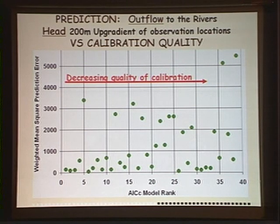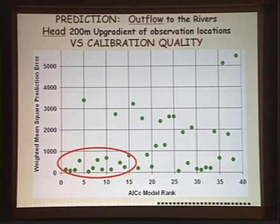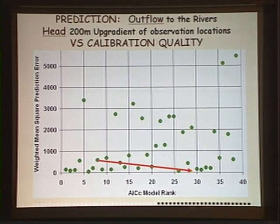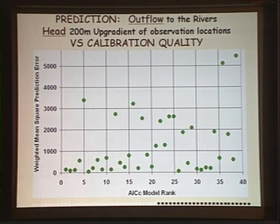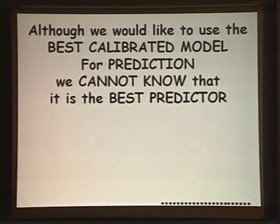We were hoping to see a nice 45-degree cloud moving up this curve, but instead we find that some well-calibrated models do a good job of predicting while others don't always do as well as the poorly calibrated models. There are some well-calibrated models that don't do a very good job of predicting at all. This happens no matter which measure you use, even for other model systems, because the calibration data do not always reflect what the prediction is dependent on. Generally, we'd like to use the best calibrated model to make our prediction.